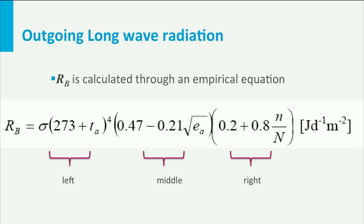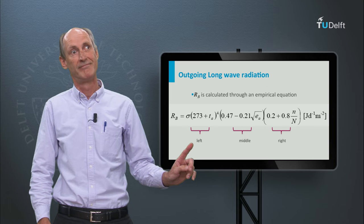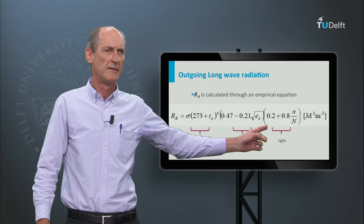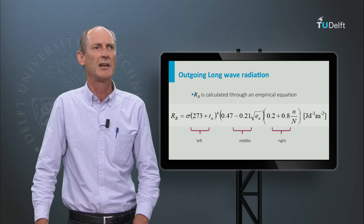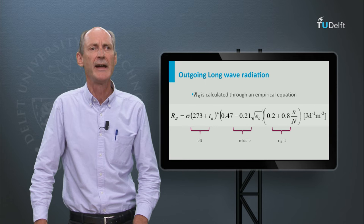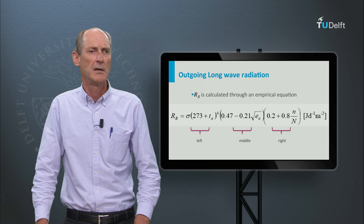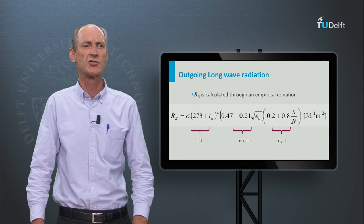The outgoing longwave radiation is calculated with a semi-empirical equation based on the longwave radiation of a warm body. The left part of the equation contains the Stefan-Boltzmann coefficient sigma and Ta, the actual temperature near the surface. The middle part contains the air humidity EA, water vapour being a strong greenhouse gas — so if the air is dry, there is more outgoing longwave radiation. The right part contains the effect of clouds, which reduce outgoing radiation like a blanket. Other greenhouse gases are not included, but humidity is, because it is a strong and highly variable one.